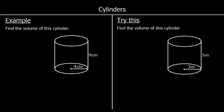A cylinder is like a circular prism, so it's got a circle as a cross section. The top and the bottom circles are identical, and if you cut through the shape at any point, you would get the same circle.